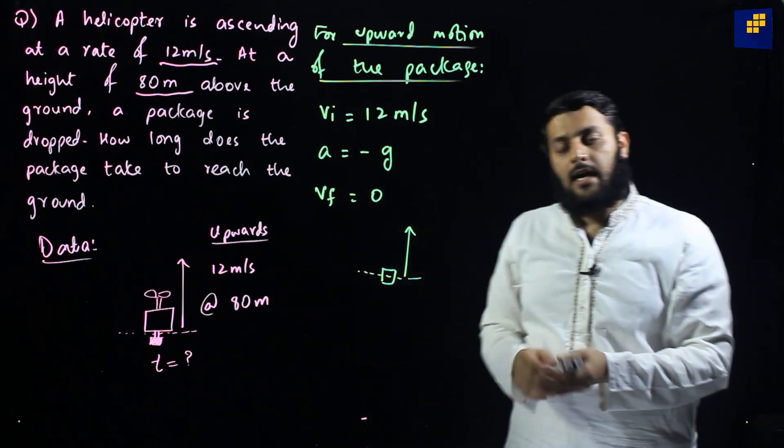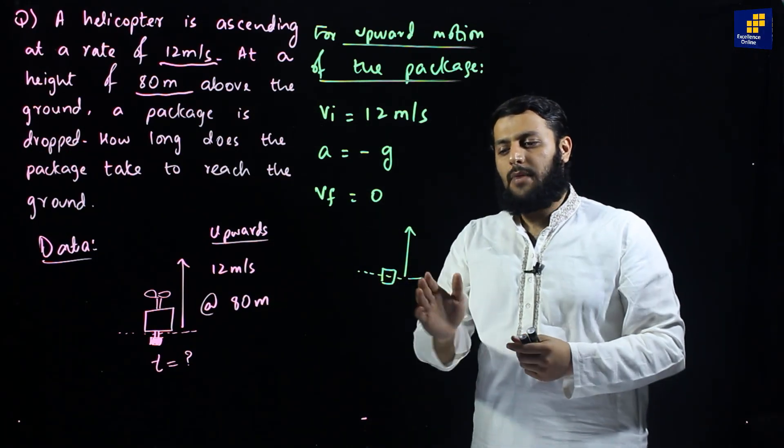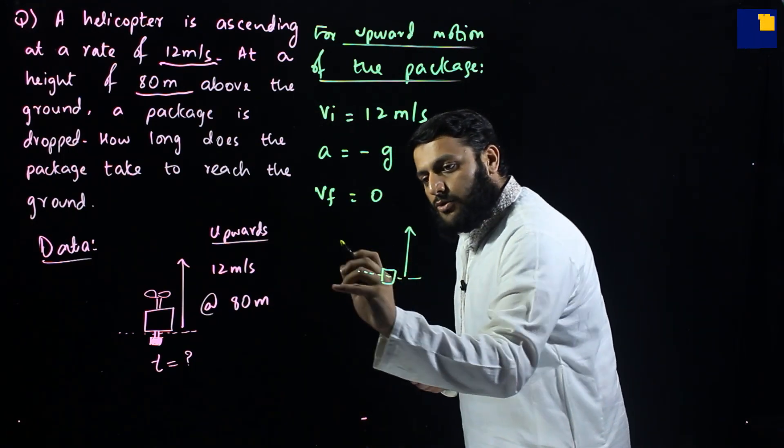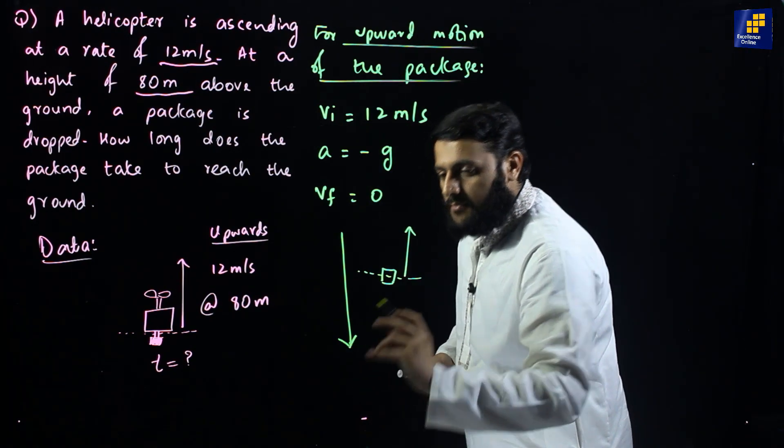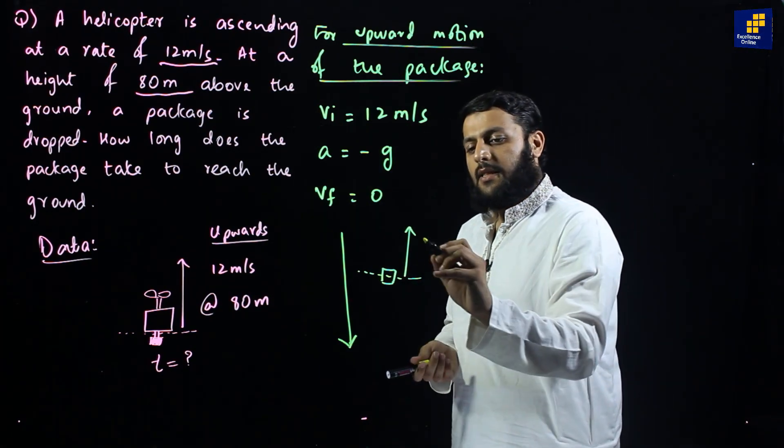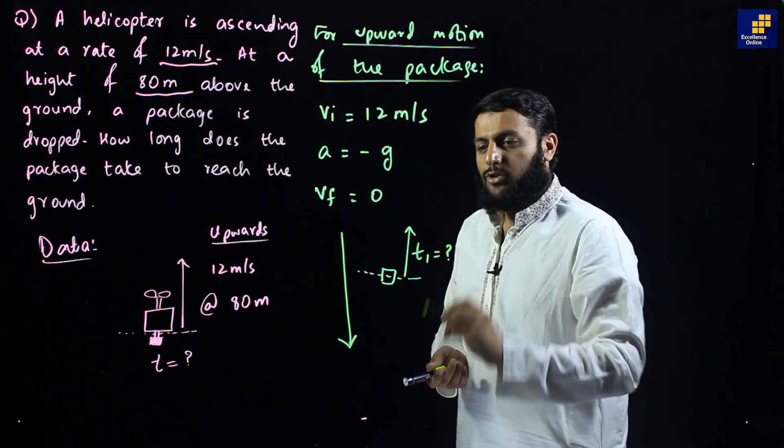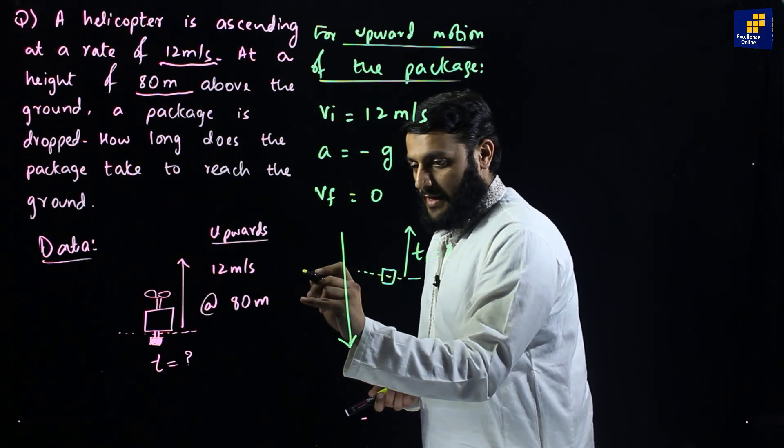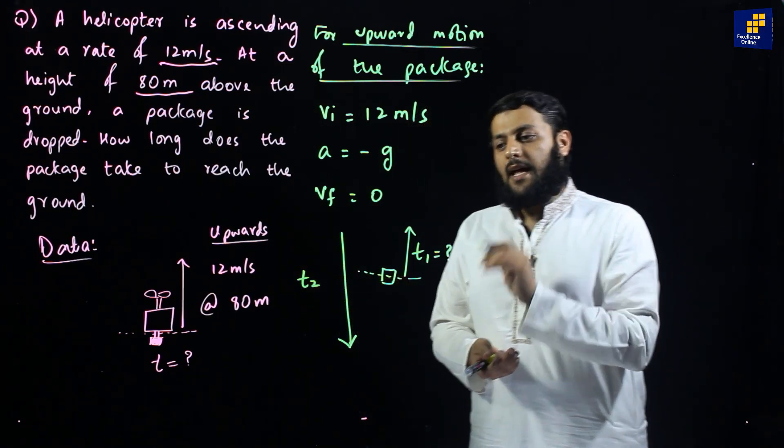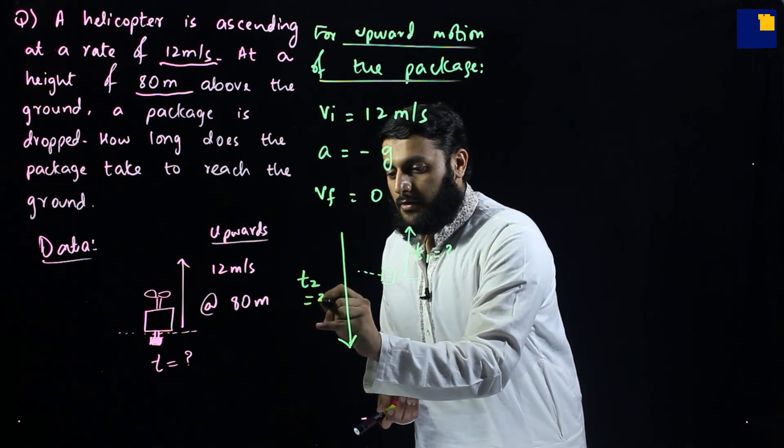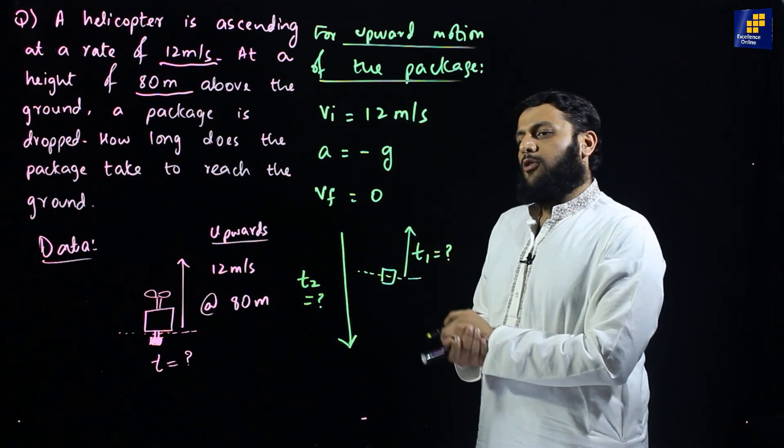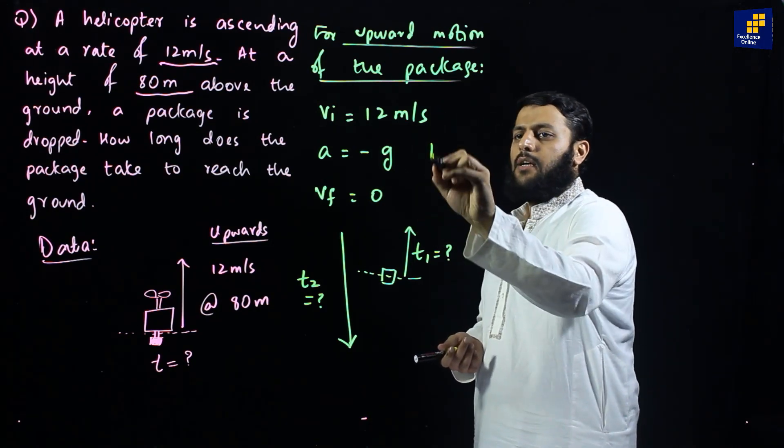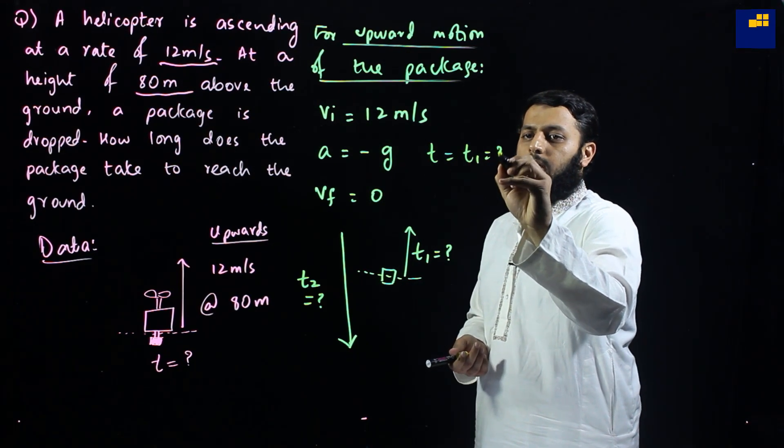We are working with that scenario that after being released from the helicopter, my package goes first up, then down. So, complete motion would be something like this. I first need to work out the time it takes for the package to reach the maximum height. Then I need to work out the time this package takes to come down. Then I need to work out the total time. So, focusing on how do we calculate time, I have given it vi, acceleration and final velocity. I guess t in this case would be t1. This is required.